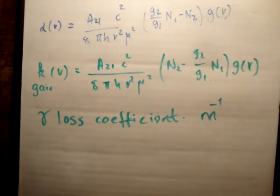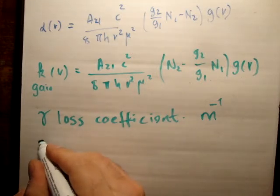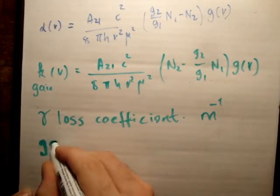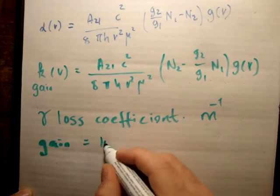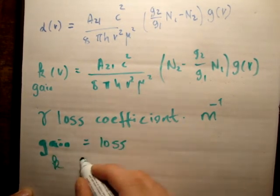...that's when your laser has reached a net gain. We'll say you're going to have your gain is equal to your loss. Or k is equal to gamma.